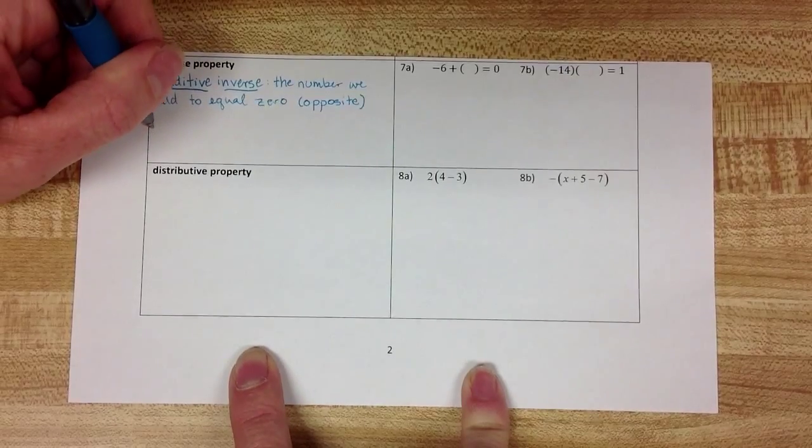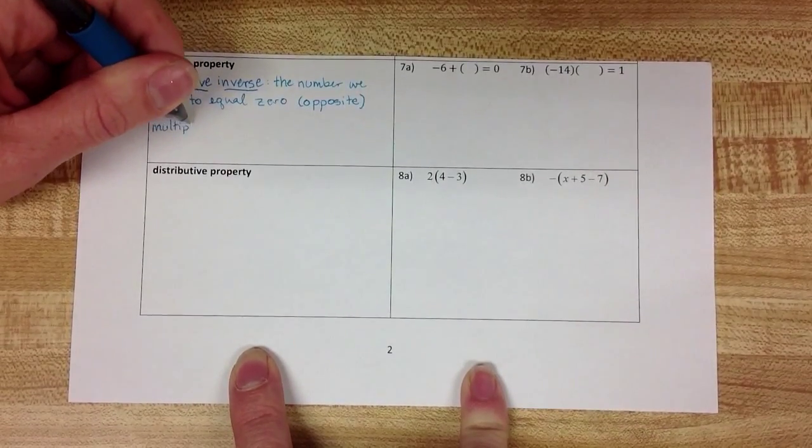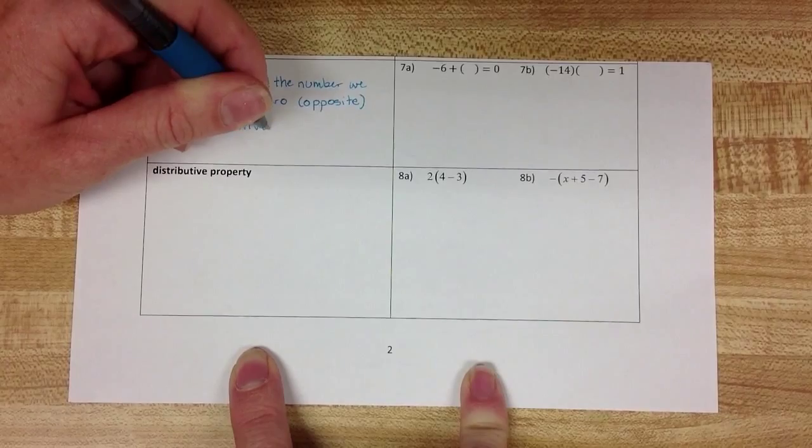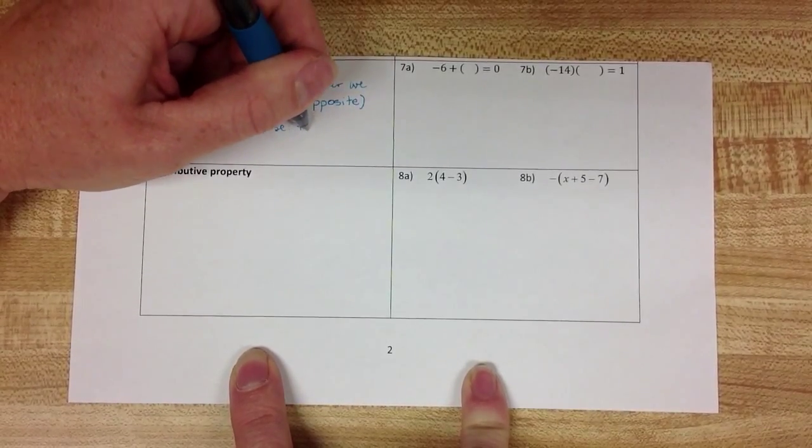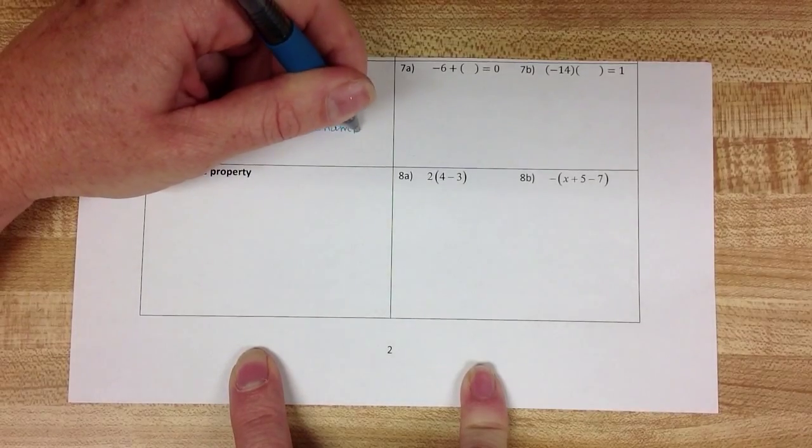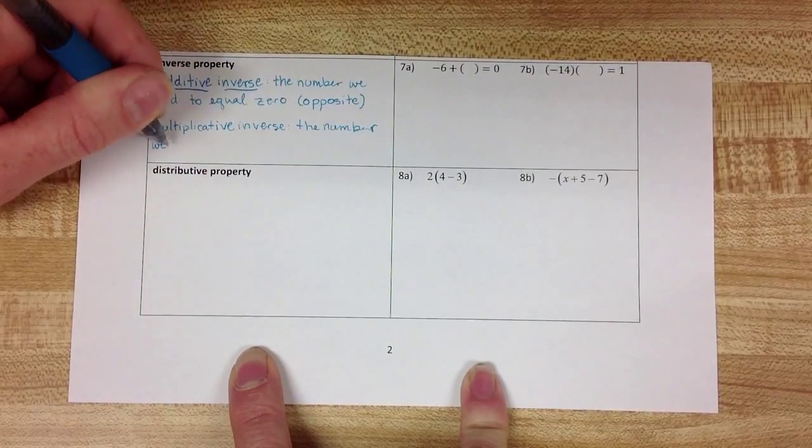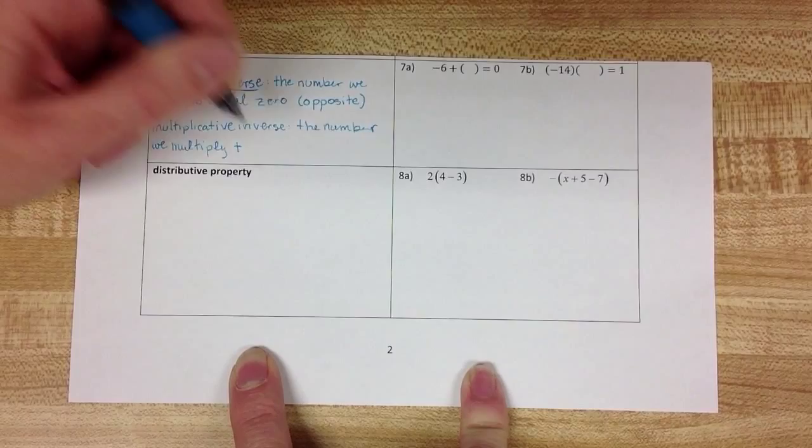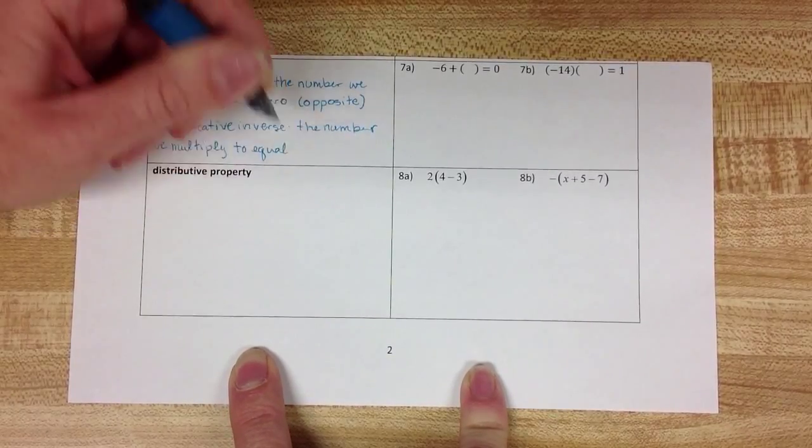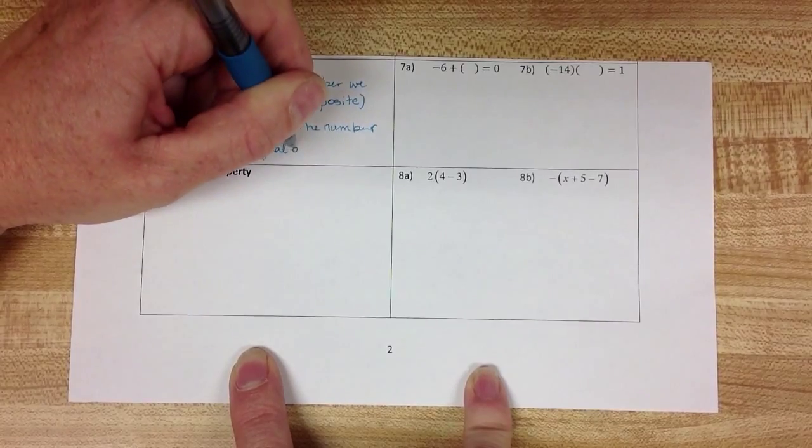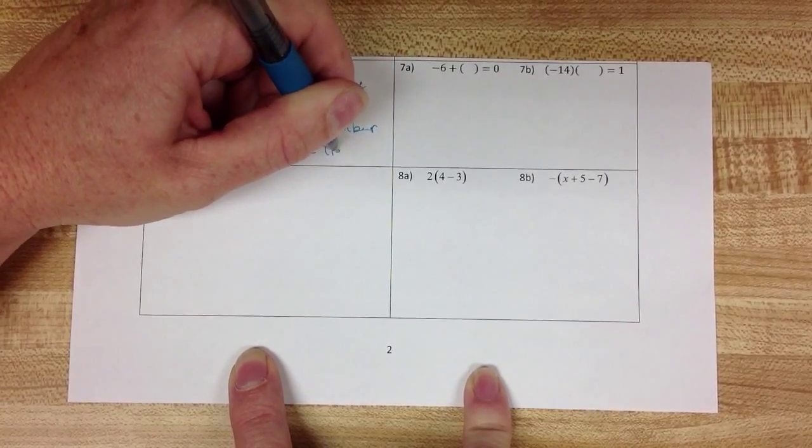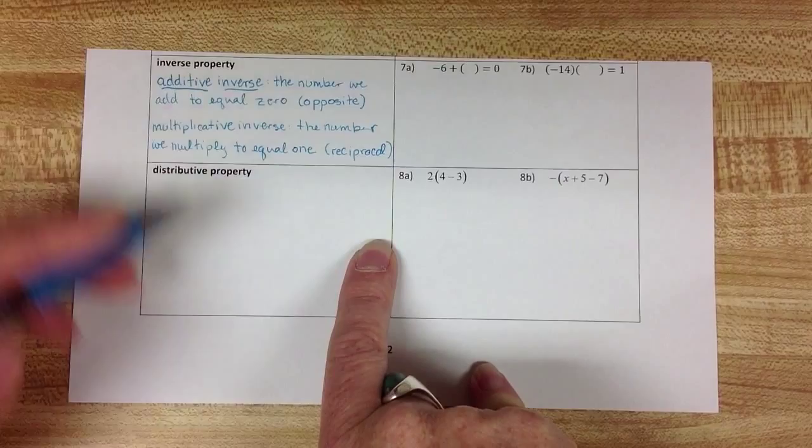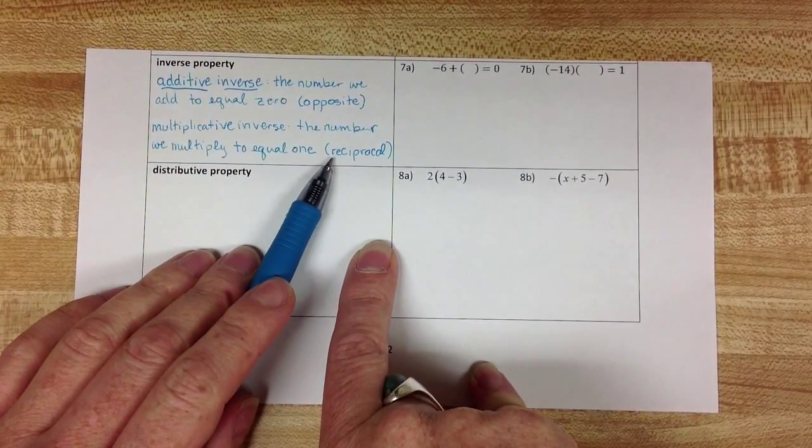The multiplicative inverse is the number we multiply to equal 1. And it is always the reciprocal of the original number.